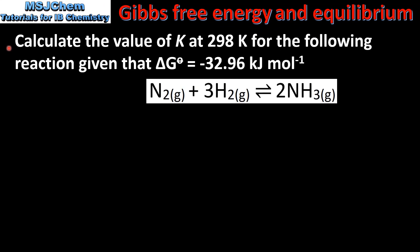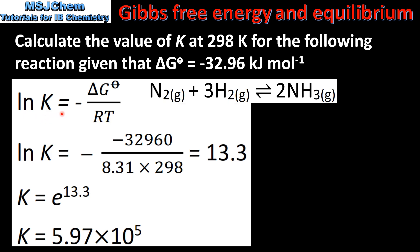Let's look at an example. Calculate the value of the equilibrium constant K at 298 Kelvin for a reaction where the standard change in Gibbs free energy is equal to −32.96 kilojoules per mole. First we find the natural log of K, converting the standard Gibbs free energy change from kilojoules to joules. When we do this calculation we get a value for ln(K) of 13.3.